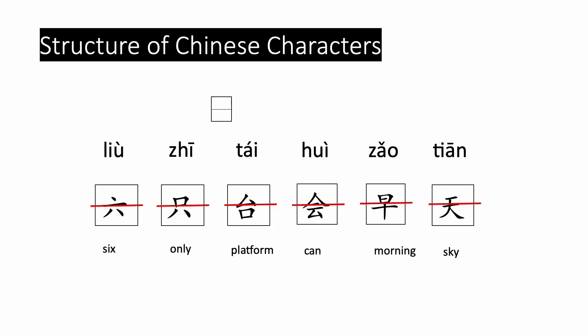Let's learn the new structures today. The first one is the top-bottom structure, 上下结构. Characters with 上下结构 often consist of two single components — one is on the top and one is on the bottom. It can be separated by a horizontal line, and it looks like two boxes stacked on top of each other.